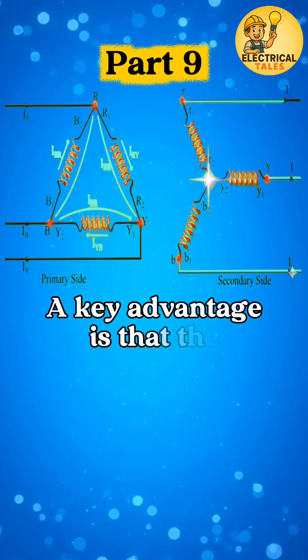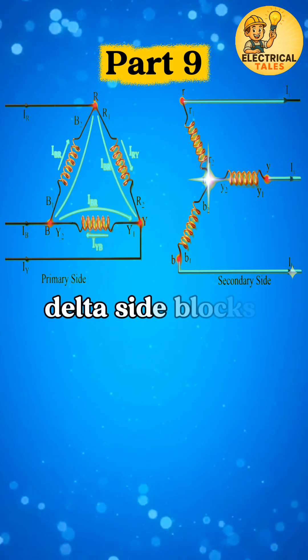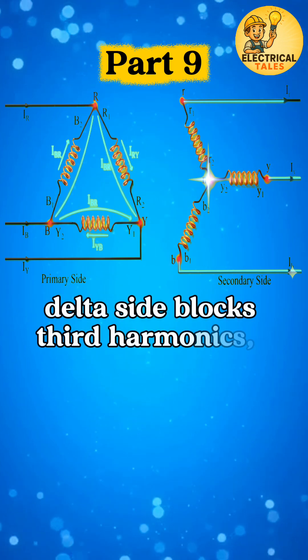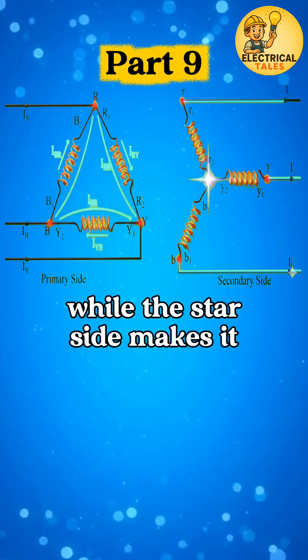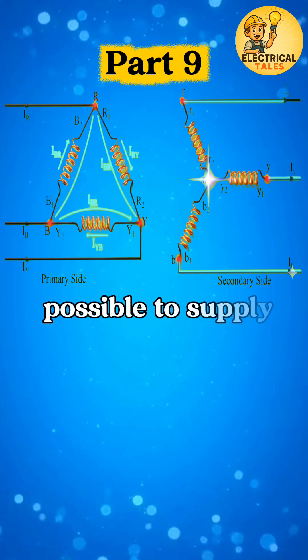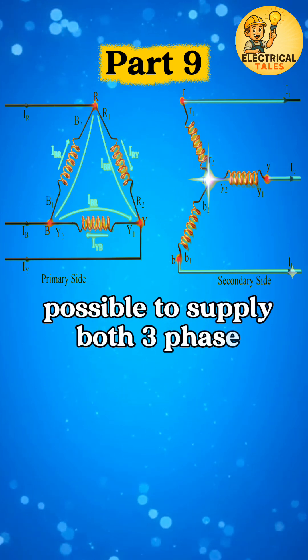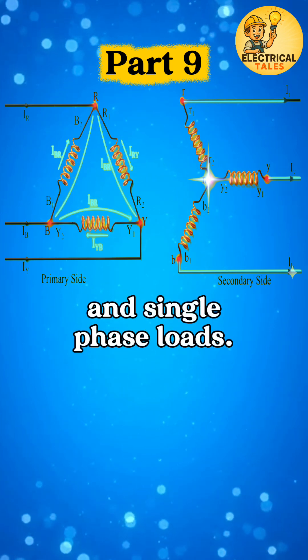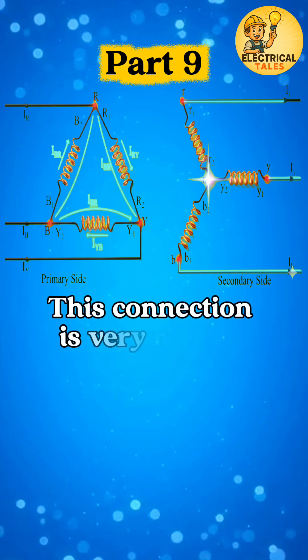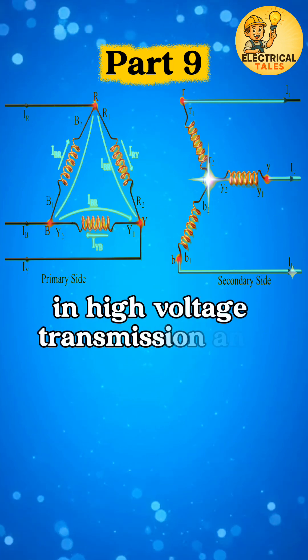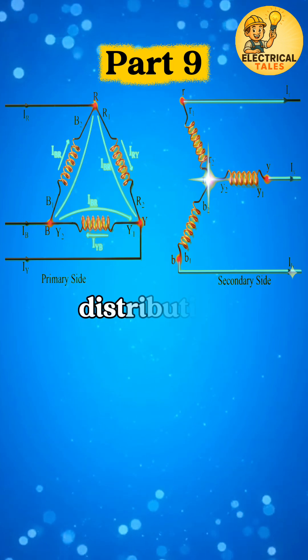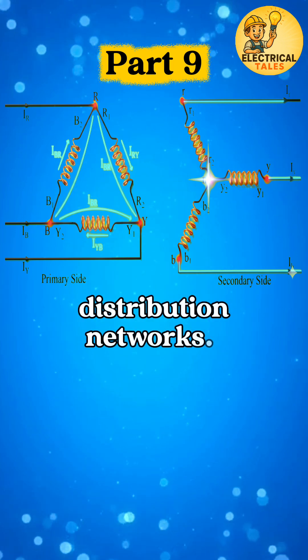A key advantage is that the delta side blocks third harmonics, while the star side makes it possible to supply both three-phase and single-phase loads. This connection is very reliable in high-voltage transmission and distribution networks.